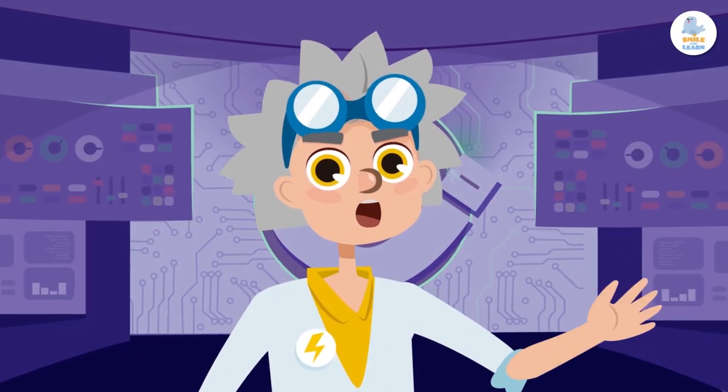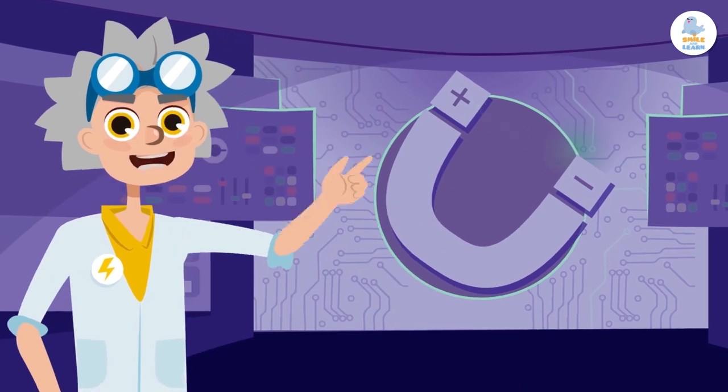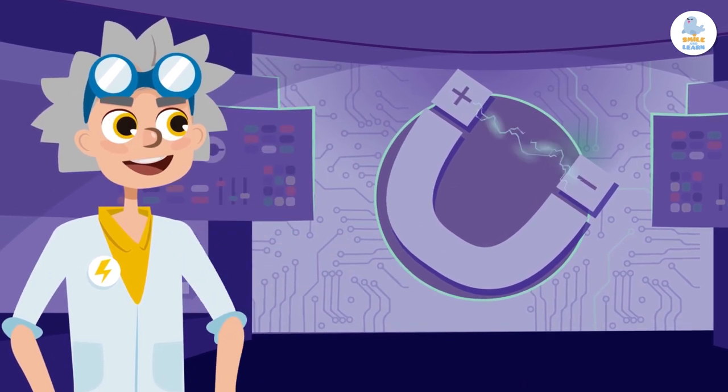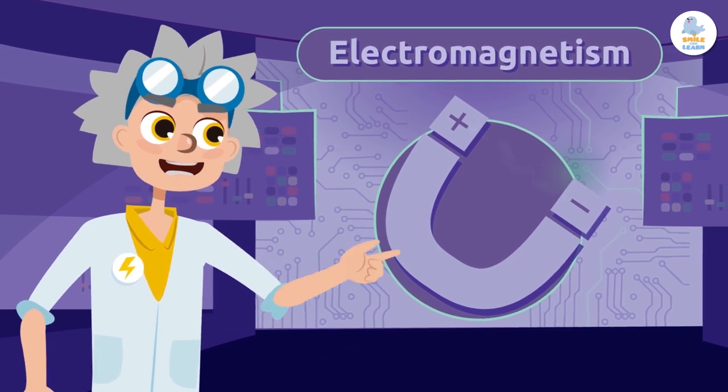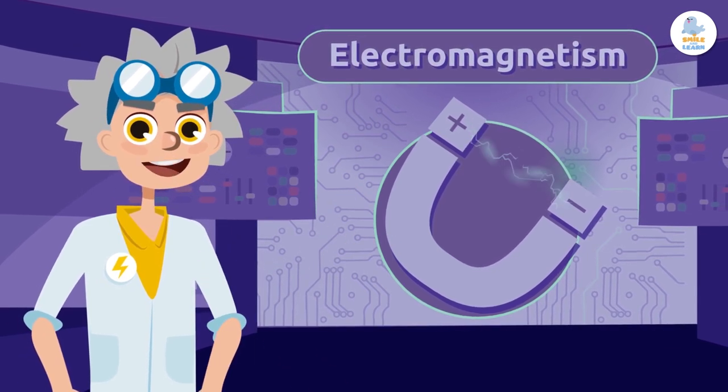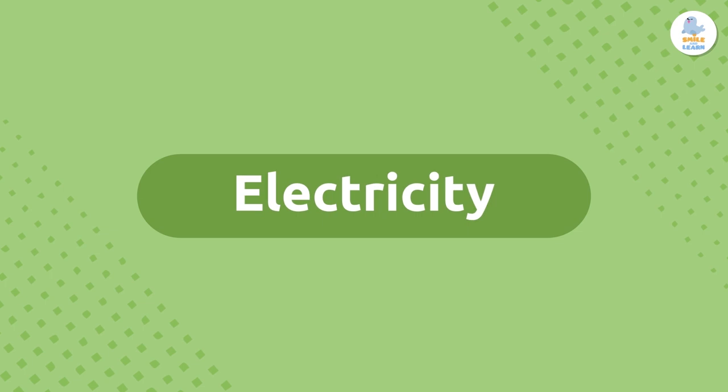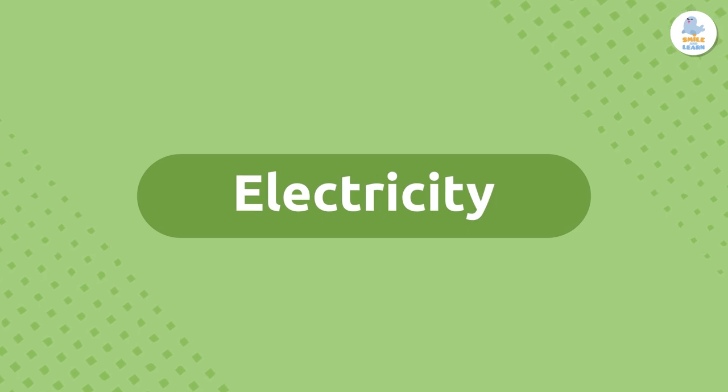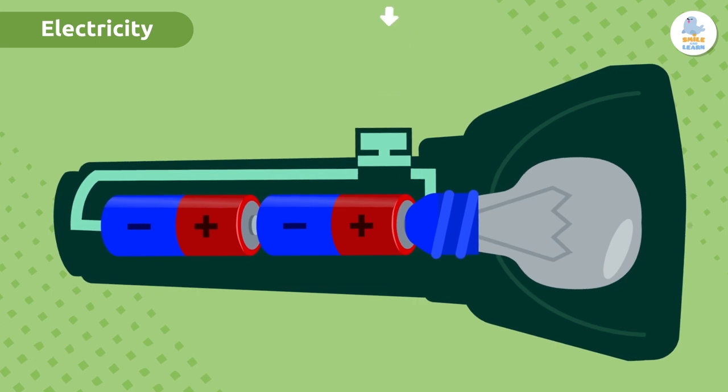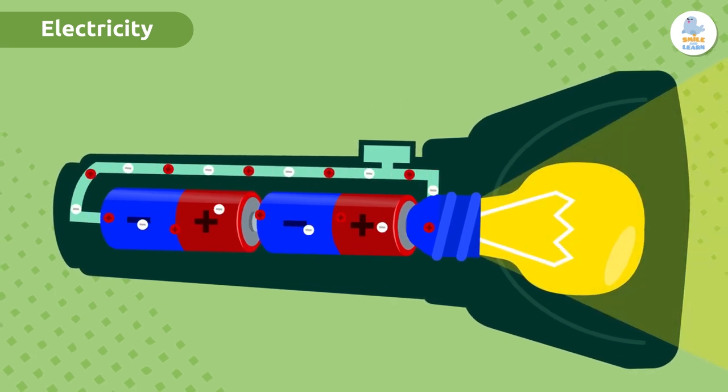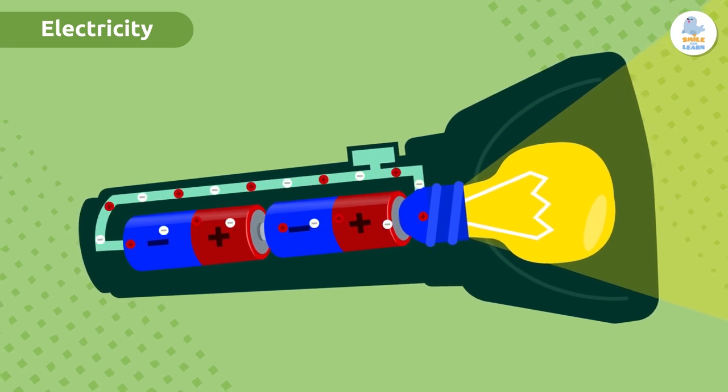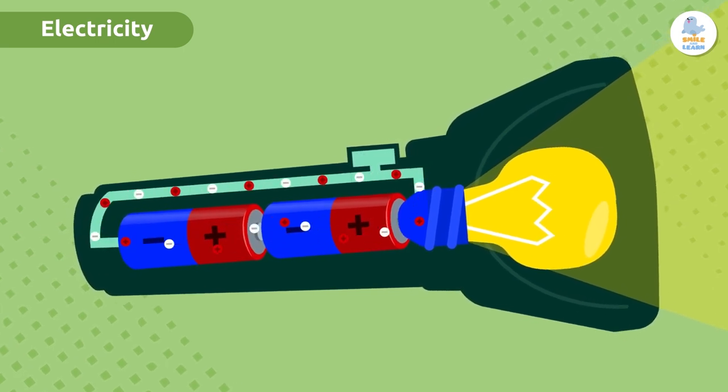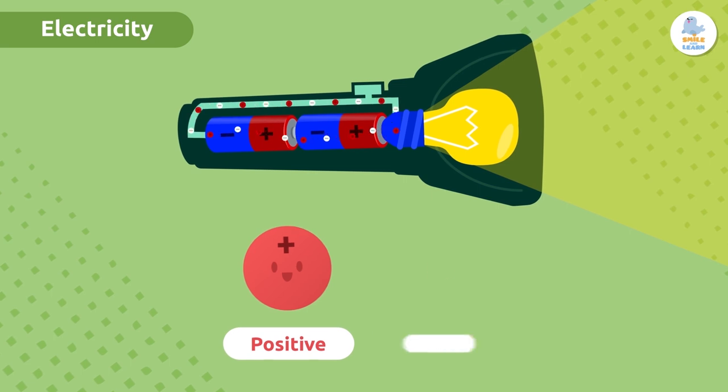Welcome back to Science Madness! In today's video we're going to learn about a very special type of magnetism: electromagnetism. First, let's review what electricity is. Electricity is a physical phenomenon that occurs when there is movement of electrical charges in objects. This is called an electrical current. These electrical charges can be positive or negative.